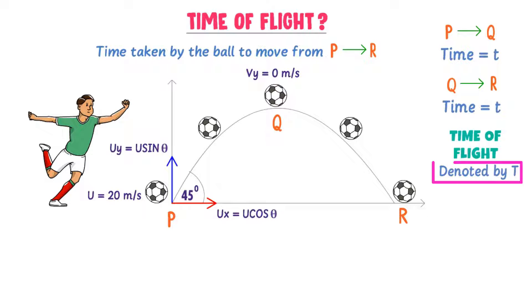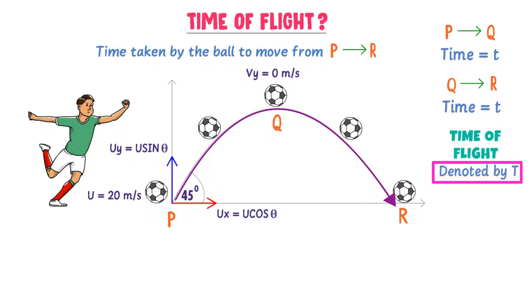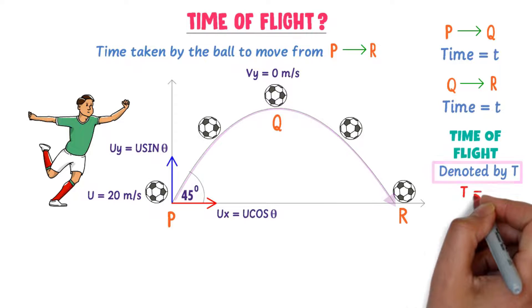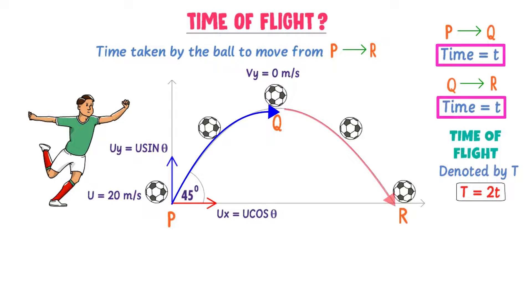What is the difference between capital T and smaller t? Remember that smaller t indicates the motion of the ball at a particular instant — the time taken by the ball to complete either the upward motion or the downward motion. While capital T is the complete time taken by the ball from P to R. So we can write that capital T equals 2 times smaller t, because in one t the ball moves upward and in another t it goes down.